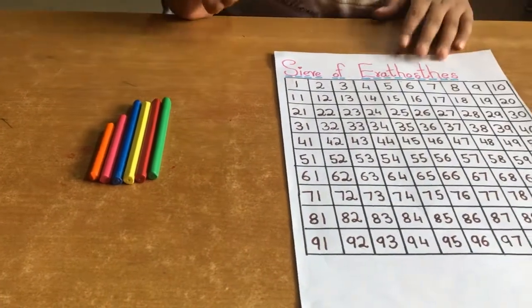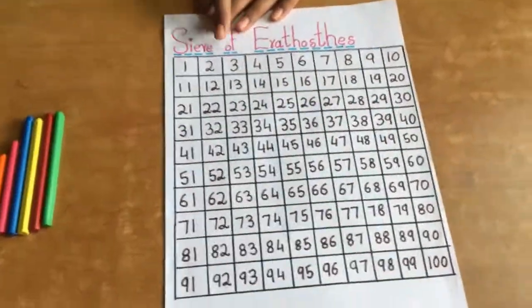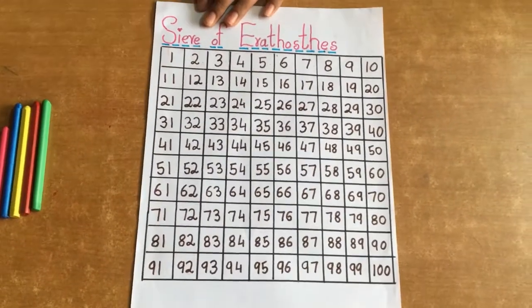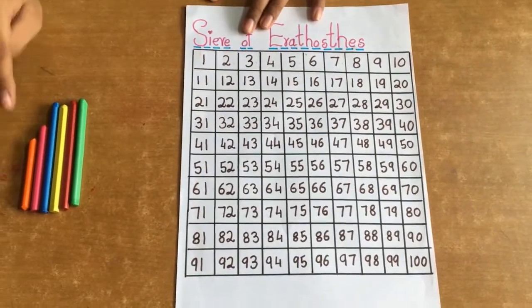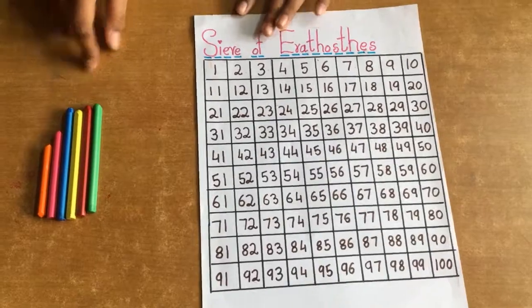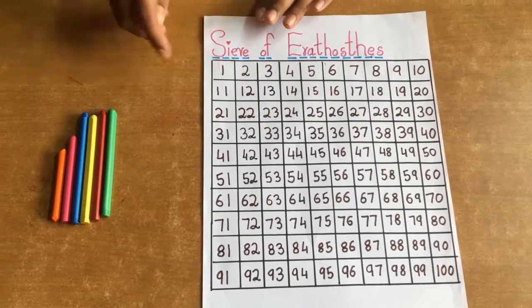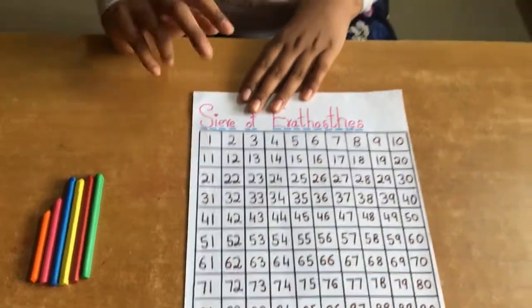Here we are going to mark all the composite numbers. You can use anything to mark composite numbers but I am using crayons. Basically prime numbers have only 2 multiples which is the number itself and 1. But composite numbers have more than 2 multiples.